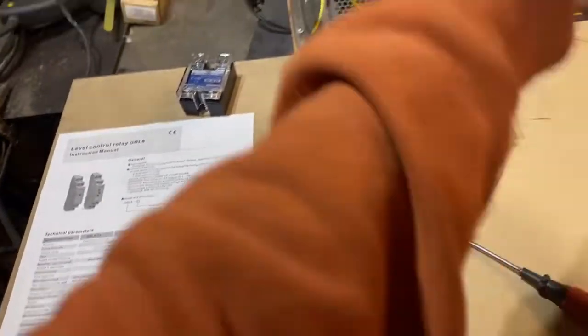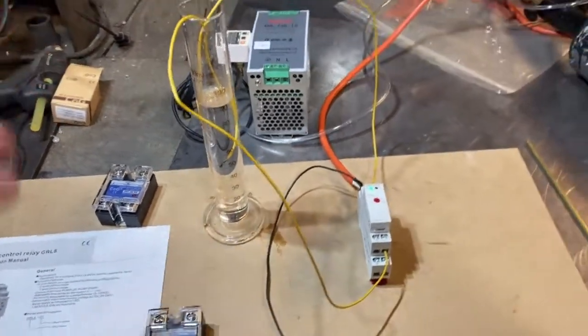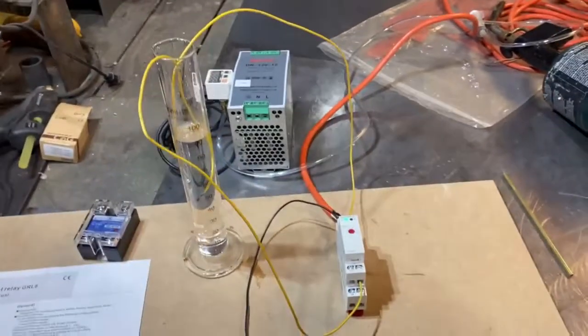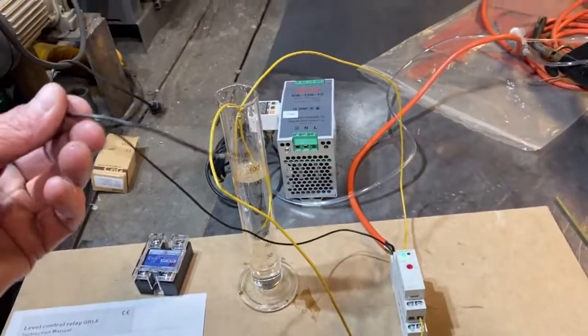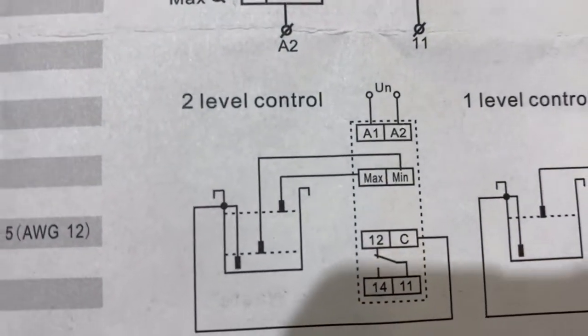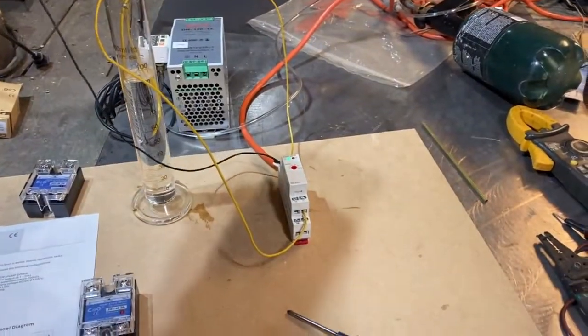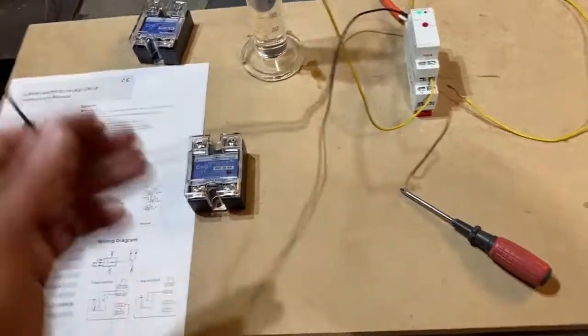So now when fluid goes back into the tank and it hits the bottom probe, nothing happens. That's what we want. And when the tank is filled back up, the level eventually hits the upper probe that's connected to max there on two level control, and the relay fires.